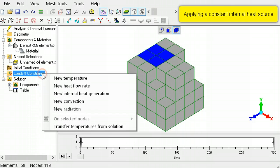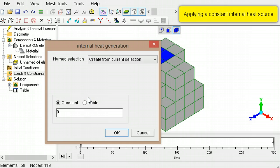Right click loads and constraints, select new internal heat generation. If this heat generation is constant over the duration of a transient thermal analysis, accept the default constant selection, then type 80.